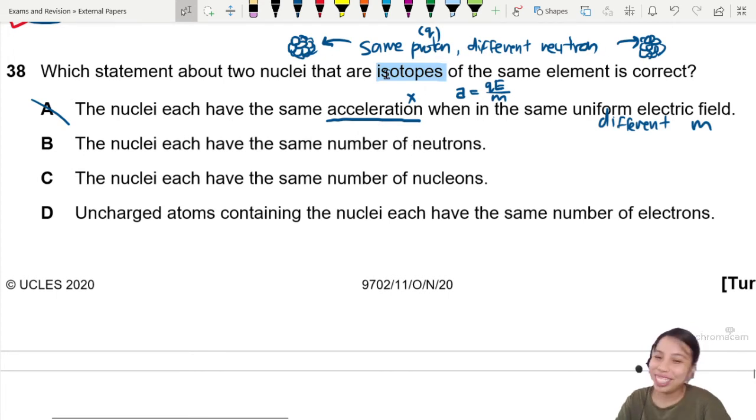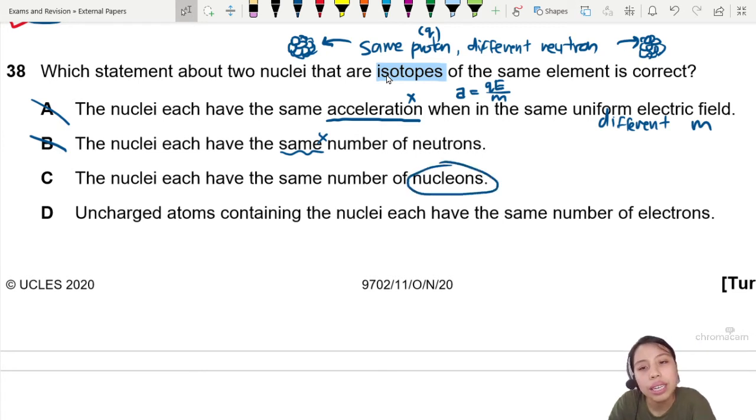Nope, we just said different neutrons. You cannot confuse me if I know that this is wrong. The nuclei have same number of nucleons. What is nucleon? Nucleon here is referring to the proton number. How many protons in total? Plus how many neutrons in total?